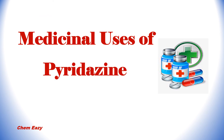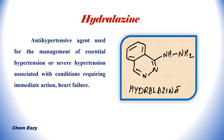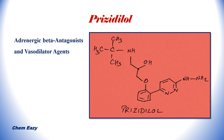Some medicinal compounds consist of pyridazine in their structure. This is the structure of hydralazine — you can see the pyridazine nucleus here. Hydralazine is one of the antihypertensive agents used for the management of essential hypertension or severe hypertension associated with conditions requiring immediate action, and heart failure. Pricidilol is another medicinal compound which consists of pyridazine in its structure, and it is an adrenergic beta antagonist and also a vasodilator agent.